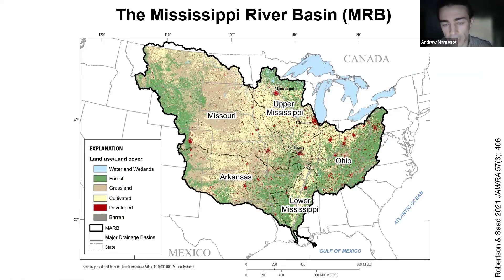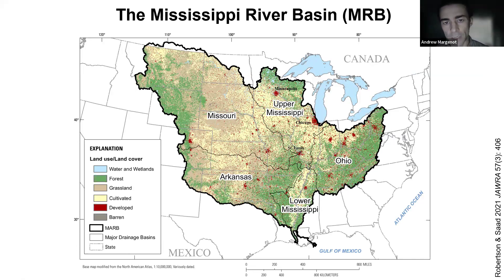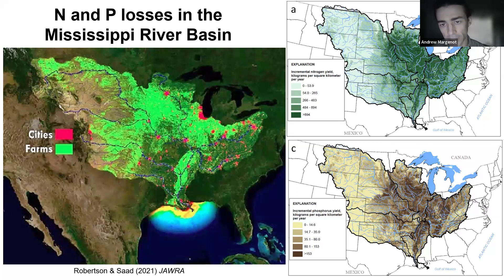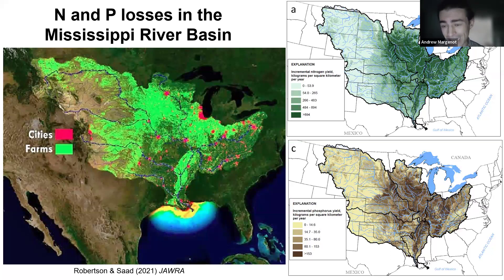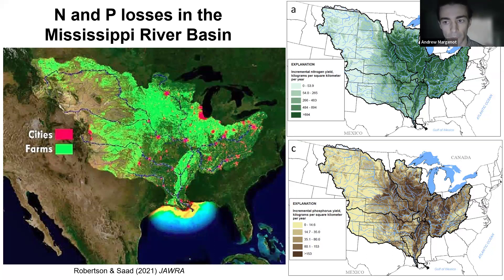We live in the MRB and specifically in Illinois we're largely in the upper MRB — the most productive swath of land in the U.S. The corn belt is largely nested in the eastern part of the MRB. We're losing nutrients from a combination of point sources and non-point sources, sometimes oversimplified as cities for point sources and farms for non-point sources. The maps on the right show estimates of relative loading for nitrate on top and phosphorus on the bottom.